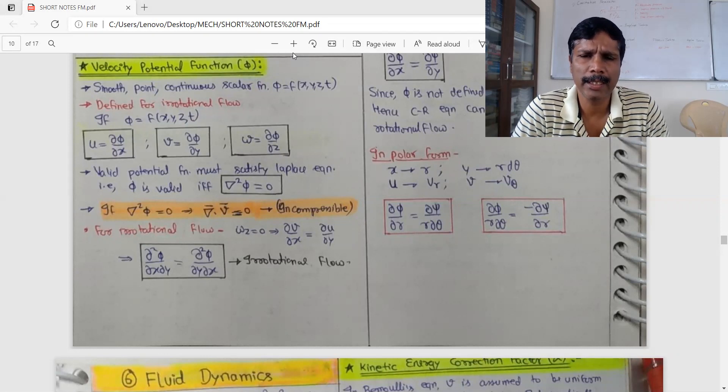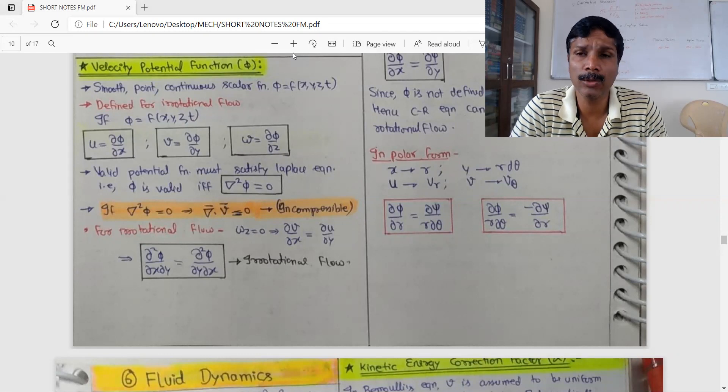When you differentiate the velocity potential function with respect to a particular direction, it gives the velocity in the same direction. If we are going to write phi_x, what is the velocity?